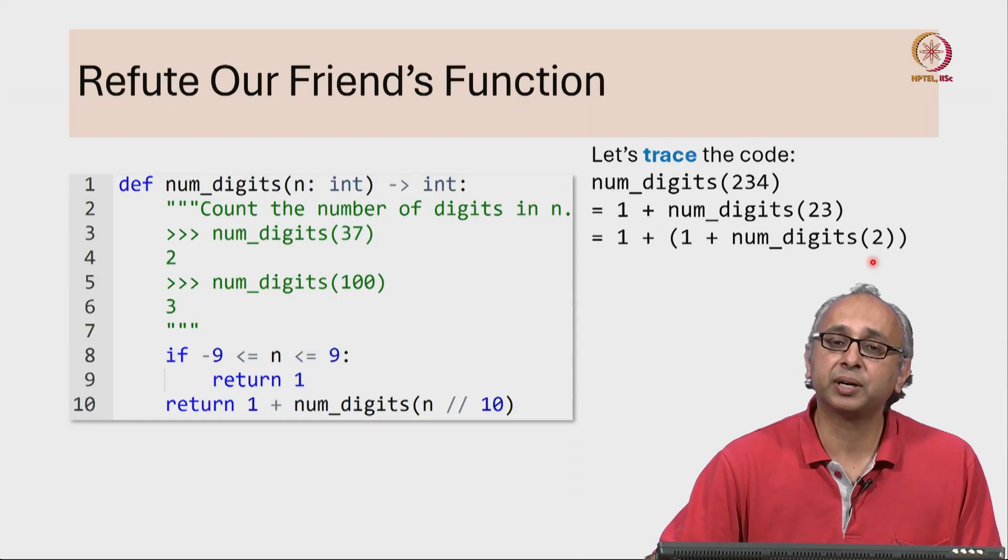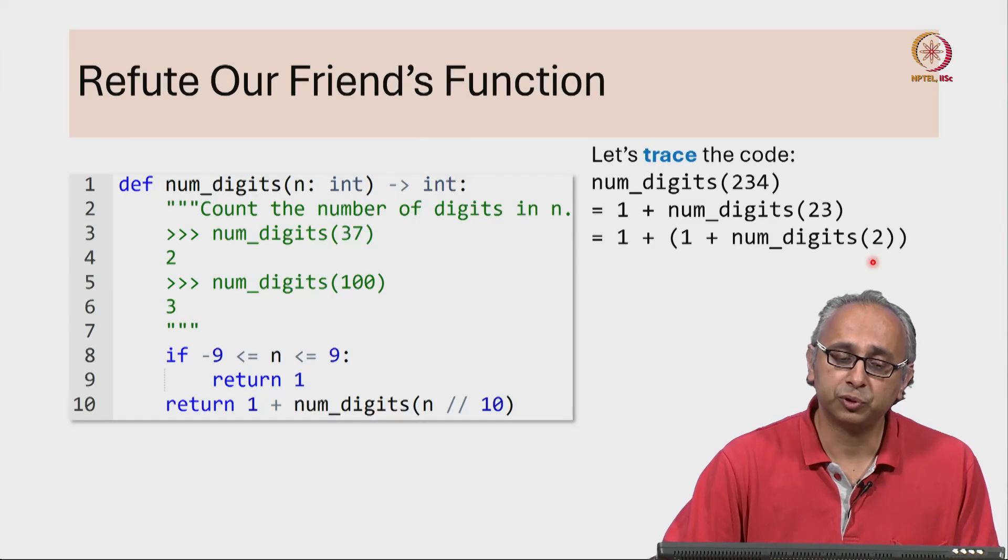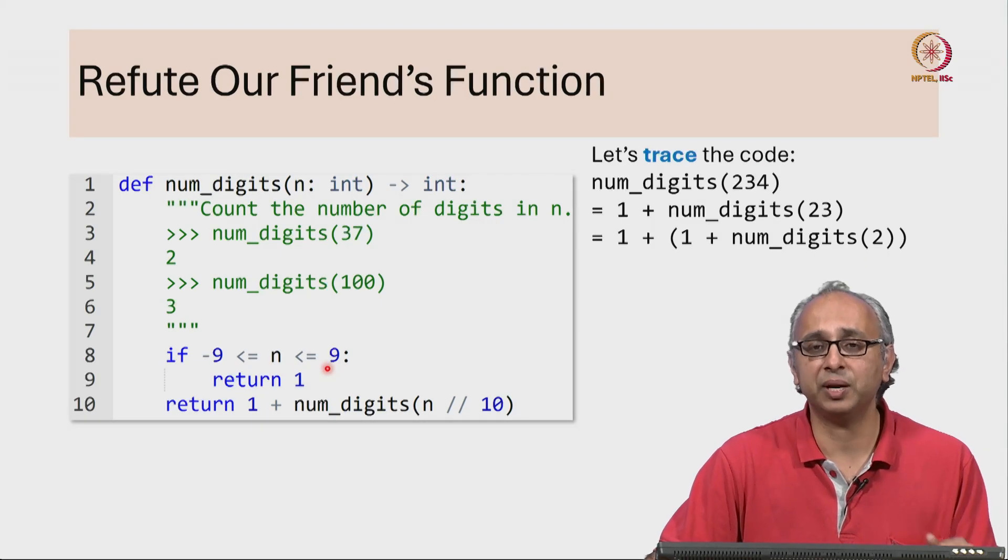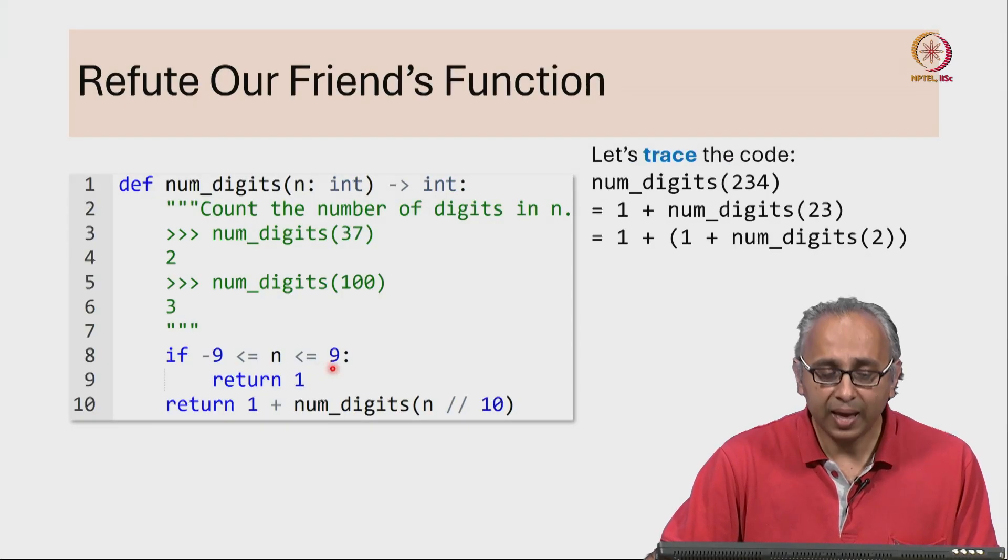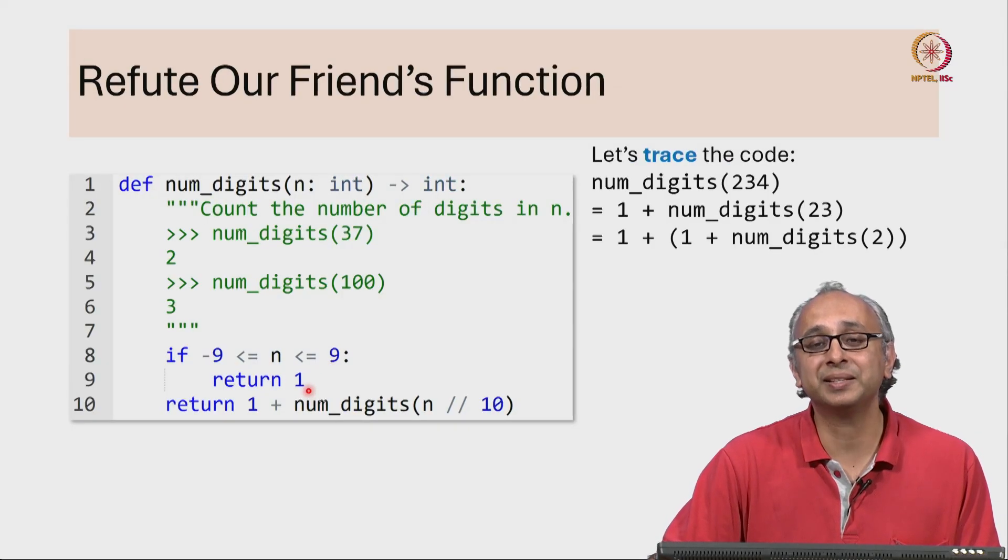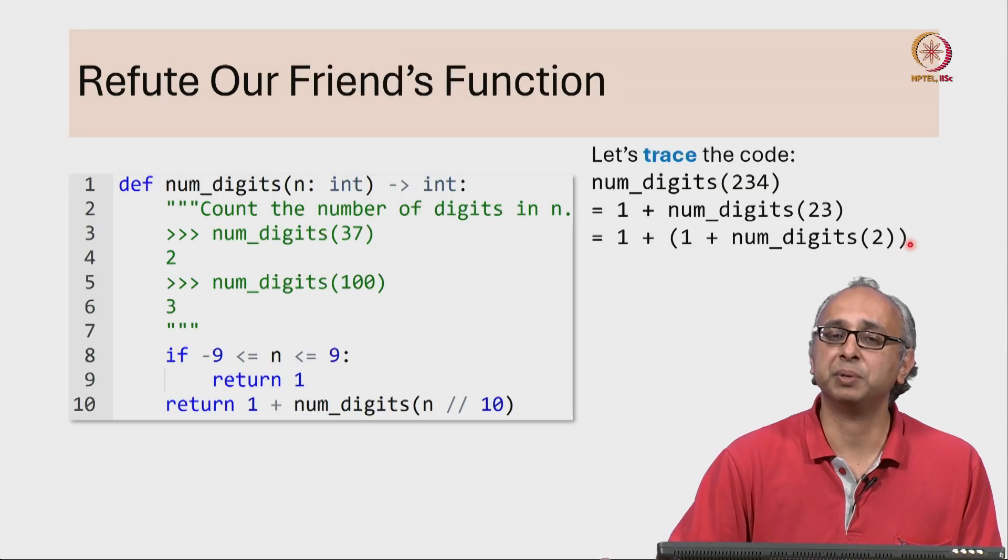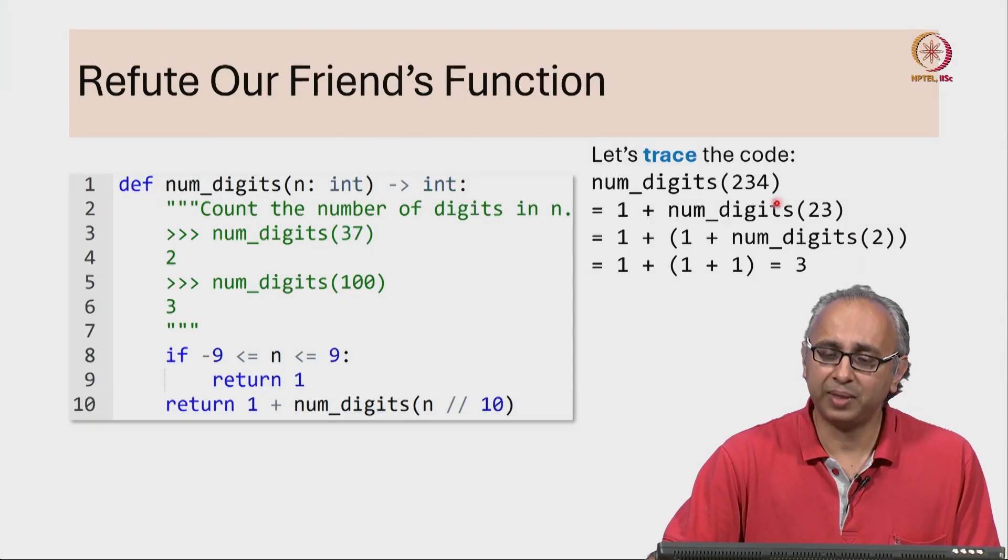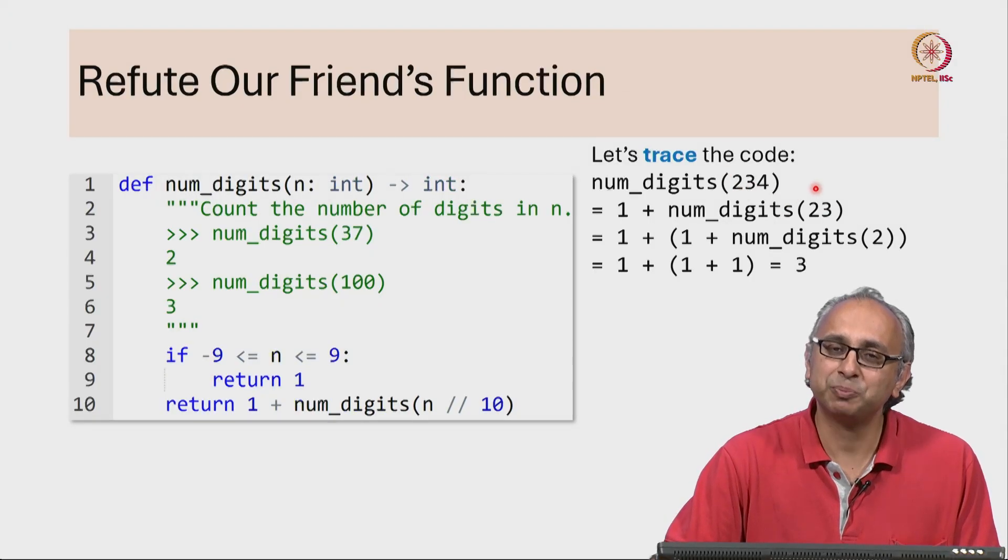And now when we make the recursive call to num digits of 2, this would be the base case because of course 2 is in the range minus 9 to 9. And that answer would be calculated directly by the base case. And that answer of course would be 1. So the overall answer would be 1 plus 1 plus 1 which is 3. And that's how many digits we were of course expecting in 234.